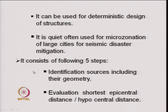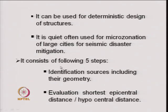The deterministic seismic hazard analysis is quite often used for microzonation of large cities for seismic disaster mitigation — the entire city is microzoned into smaller regions and for each region one specifies the maximum level of ground acceleration for which structures should be designed. The DSHA consists of four steps. First is the identification of sources including their geometry — these sources could be a point source, a line source, or an area source, and one must identify what kinds of earthquake sources surround the site.